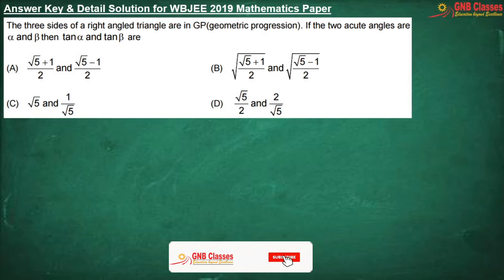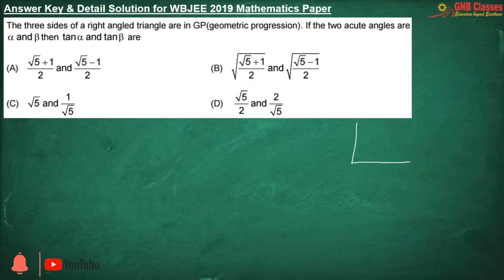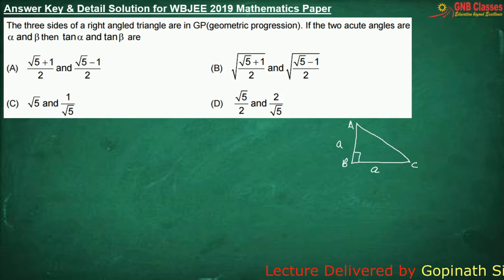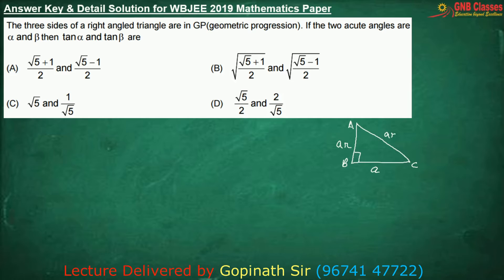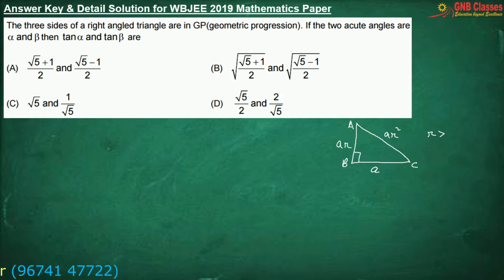In this problem, they have said that the three sides of a right-angle triangle are in GP. Let me draw a right-angle triangle. The sides of this right-angle triangle are in GP — let me say this side is a, so this side is ar, and this side will be ar squared, where r is greater than 1 in this case.